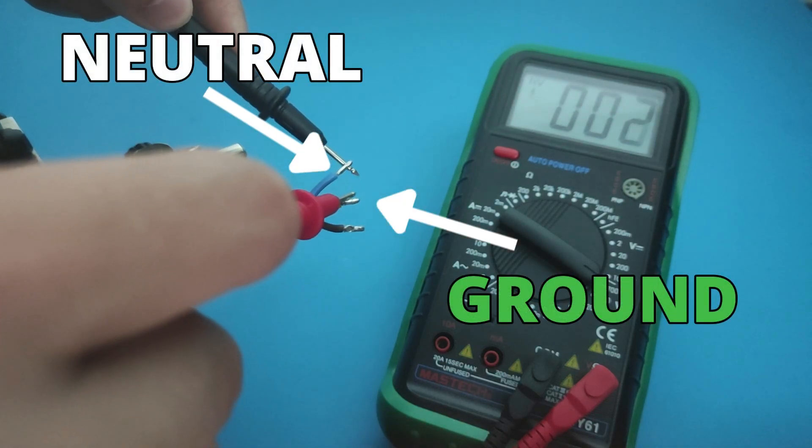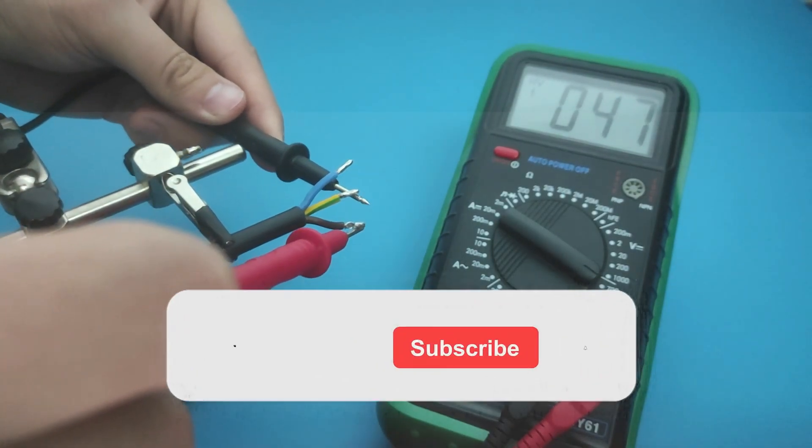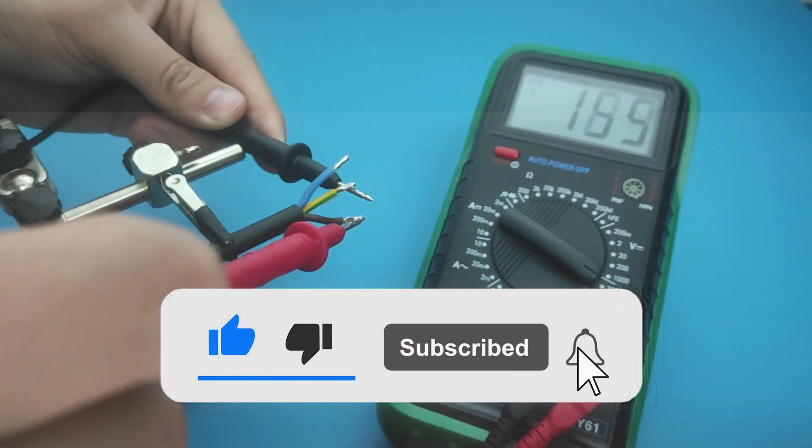As you can see, we found grounding and neutral wire. Now let's make sure the third wire is hot. And we got the measured voltage which says that the third wire is hot.